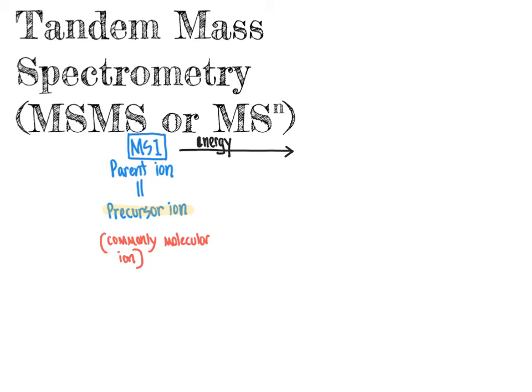We refer to those fragments as either daughter ions. Why daughters and not sons? I don't know. But we go from the parent ion to the daughter ion. And more commonly now in current preferred terminology, rather than saying daughter ion, the typical way of referring to this is as a product ion, so that we are not adding any gender to the terminology that is being used here.